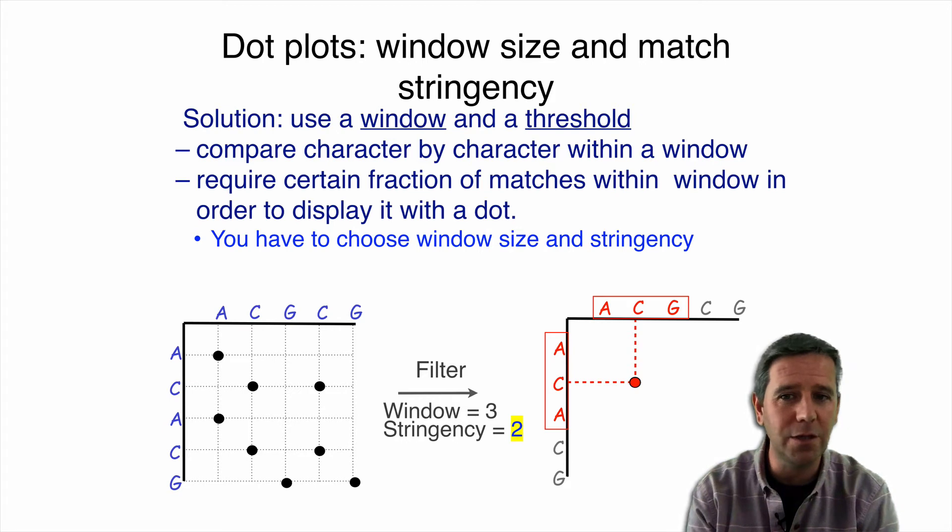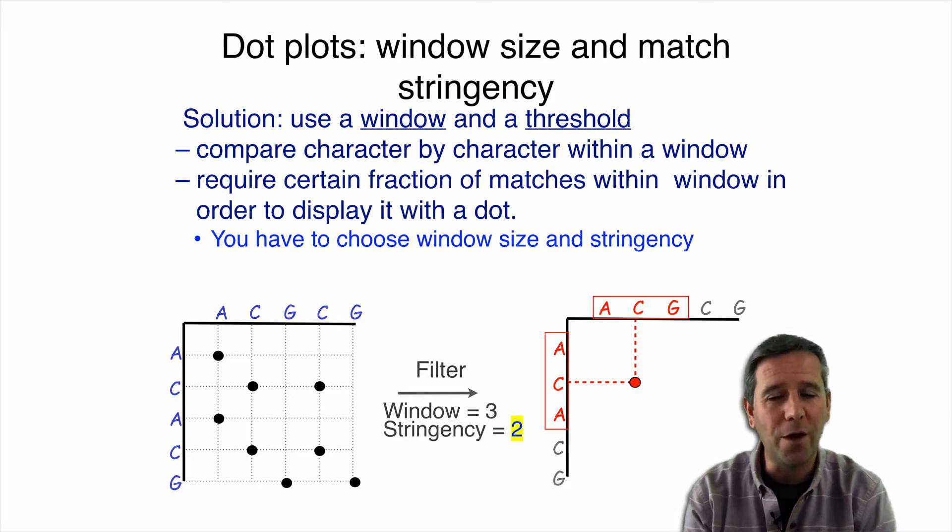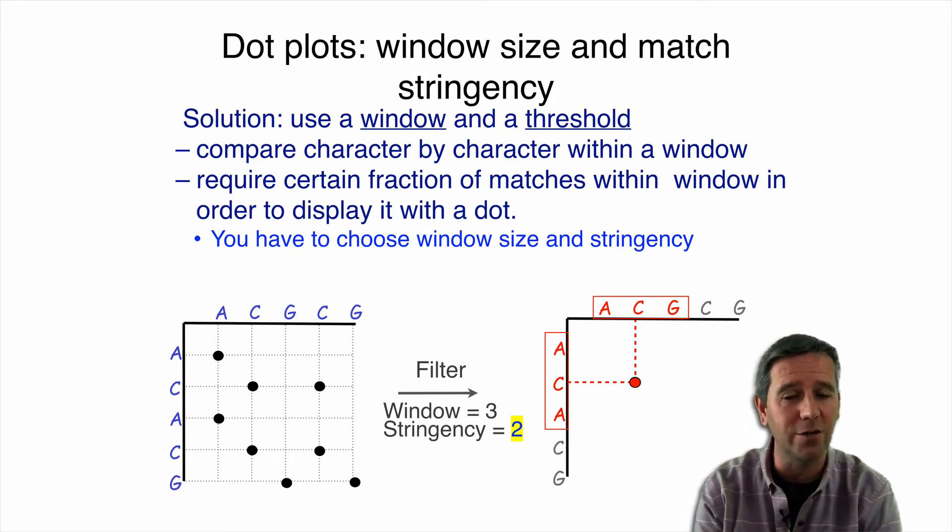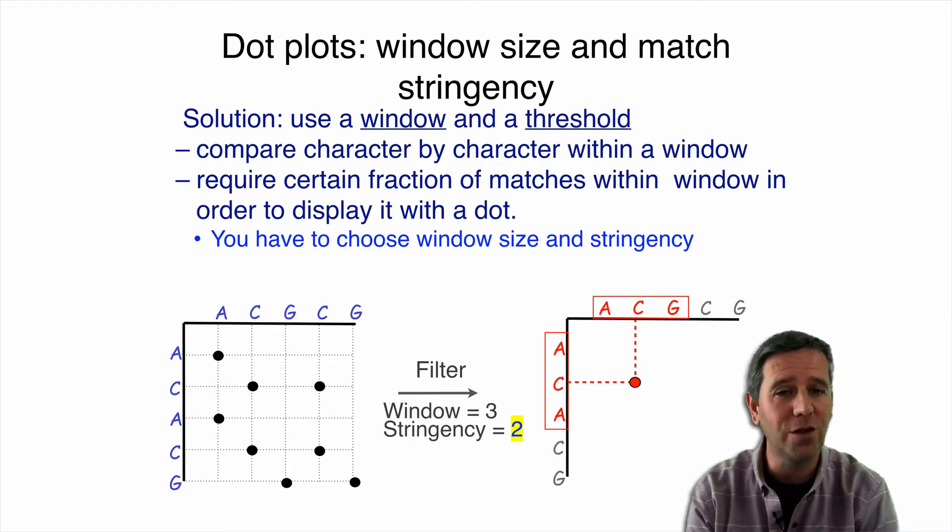So we're going to do the same. The mechanics will be the same. I start with my first window here. It's still a window size of three. But the difference is my stringency is two. So here I have a dot right away. These first two windows actually will result in a dot because the A and the C now are enough to meet our stringency threshold. So those AC matches, those first two characters in the window are sufficient to give me a dot in this case.